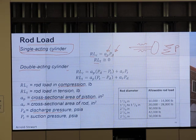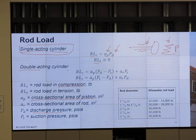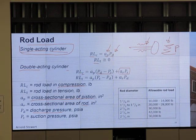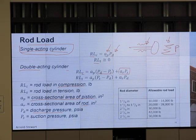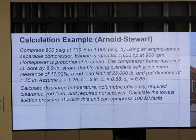Rod load in tension - when we pull it back, we don't have any rod load in anything. But for double acting, we have pressure on both sides. It has to act against the difference in the pressure. So for compression, it's cross sectional area multiplied by delta P, plus AR times PS. AR is the cross sectional area of the rod itself, and PS is the suction pressure. Here's the equation and we have some recommendations for rod diameter and allowable rod load.